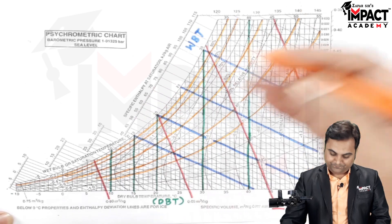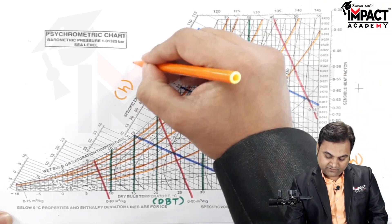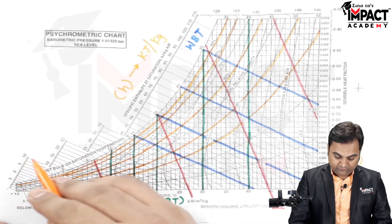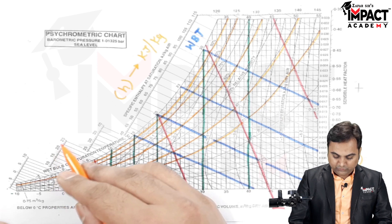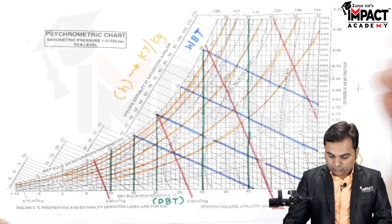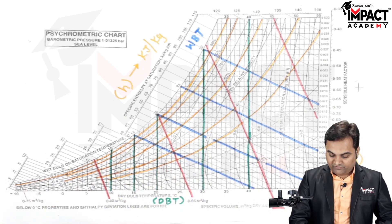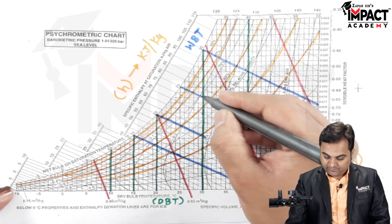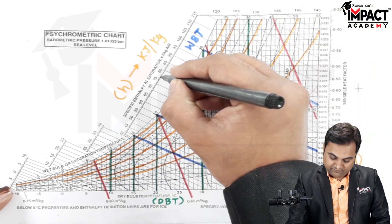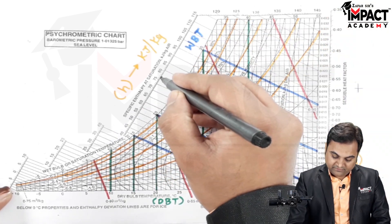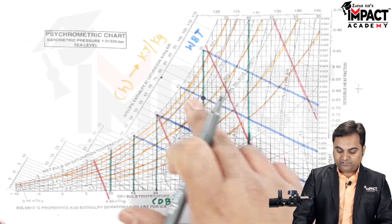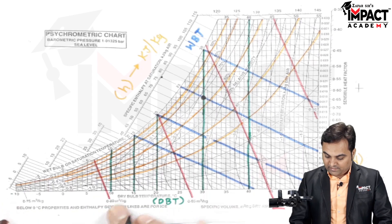The chart also shows specific enthalpy, denoted by h, with units of kilojoules per kg of air. The scale reads values such as 10, 15, 20, 25 kJ/kg — a range of 5 kJ/kg between values. To find the specific enthalpy of a point, we project that point onto the specific enthalpy scale and read the value — for example, 76.5 kJ/kg.